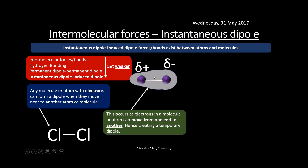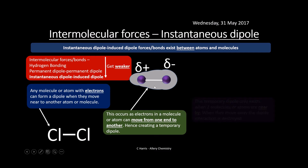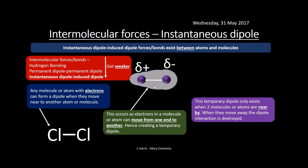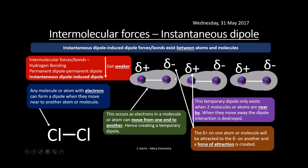This occurs as electrons in a molecule or atom move to one end of the molecule. When it comes near another molecule, the electrons are nudged to one side, creating a temporary or instantaneous dipole — delta negative on one side, delta positive on the other. This temporary dipole only exists when two molecules or atoms are nearby; when they move away, the interaction is effectively destroyed.